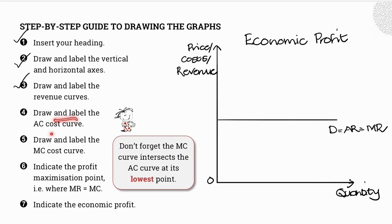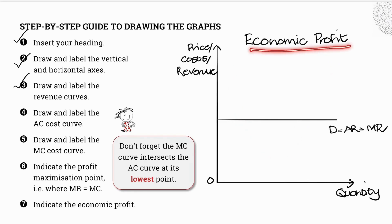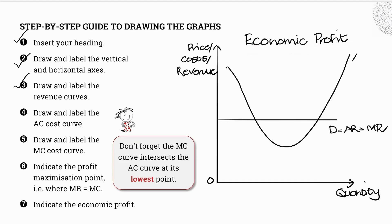Draw and label the average cost curve. Remember, we are dealing with economic profit, which occurs when our average revenue exceeds our average costs. So graphically, we illustrate this by drawing our average costs curve below our average revenue curve — we want to show that average costs are below average revenue. I'm going to draw in my average costs curve and label it. Then I need to draw and label my marginal cost curve, remembering that the marginal cost curve intersects the average cost curve at its lowest point.